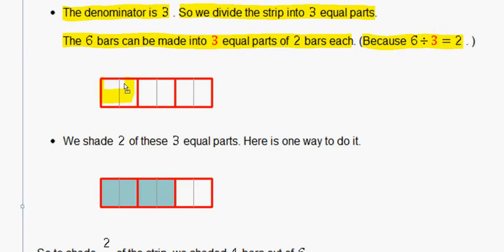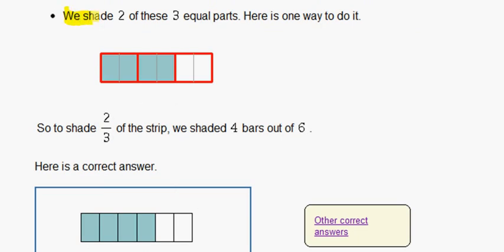So our six bars turn into one part, two parts, three parts. We shade two of these three equal parts. Here is one way to do it.